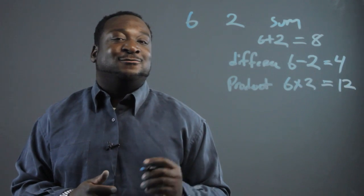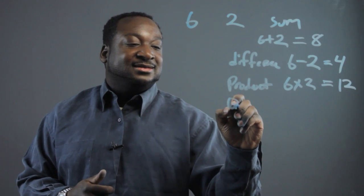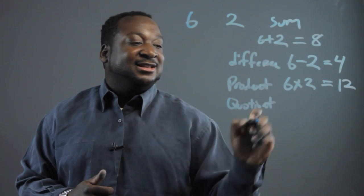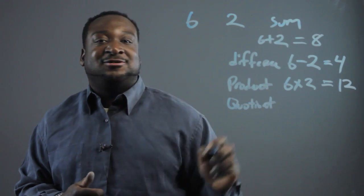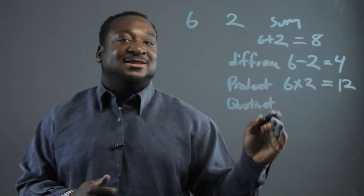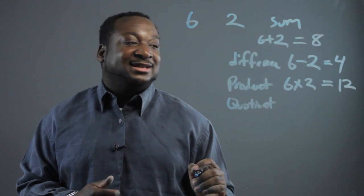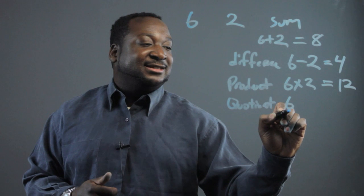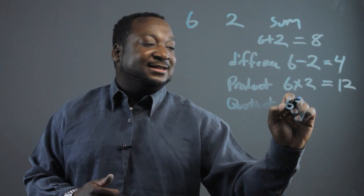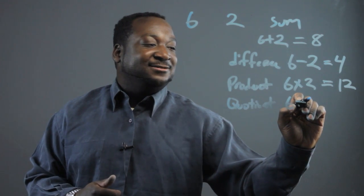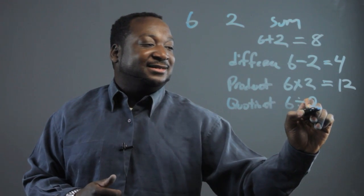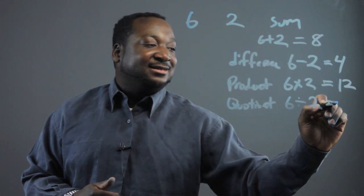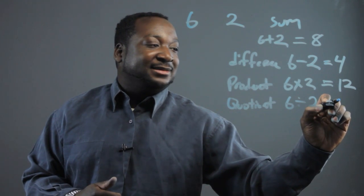And now you've got a quotient. Whenever you hear quotient, that means a number divided by the other. So six divided by two, that's equivalent to three.